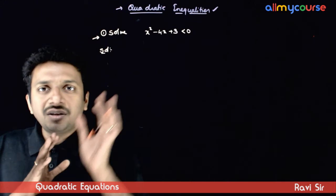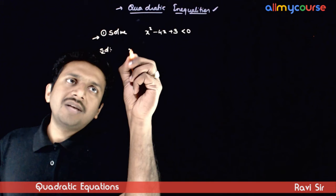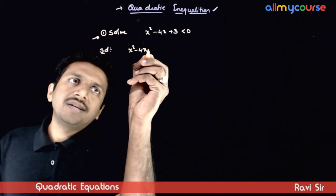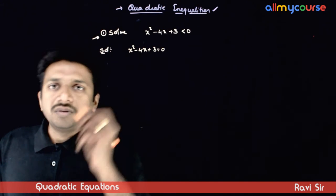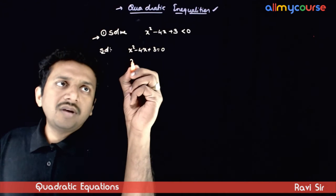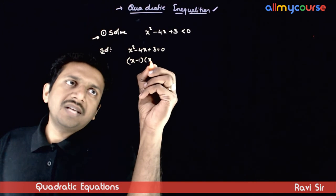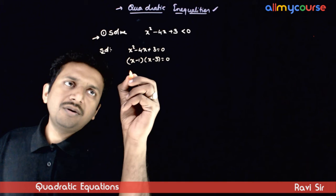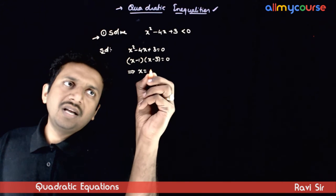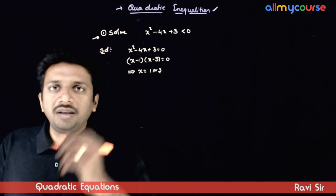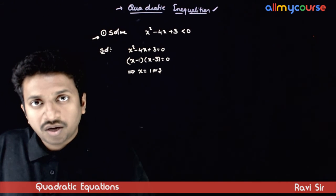First you need to find the roots of this equation, so x square minus 4x plus 3 equal to 0, solve this. x minus 1 times x minus 3 is equal to 0, this implies x is equal to 1 or 3.